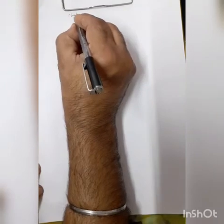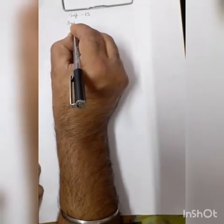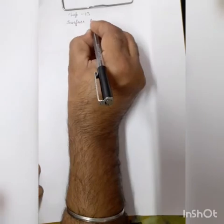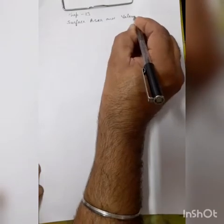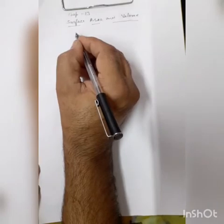Hello everyone, dear students. Today we are going to start the Surface Area and Volume chapter, chapter number 13 of ninth class. Our first topic of surface area and volume will be the surface area of cube and cuboid.